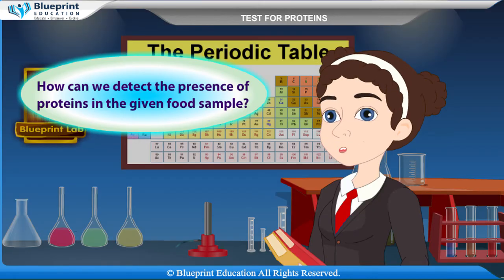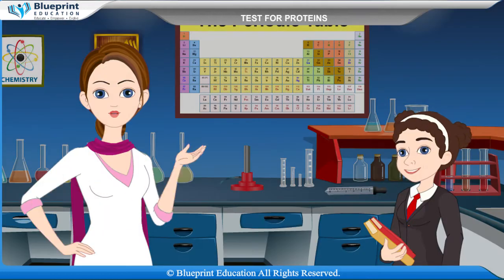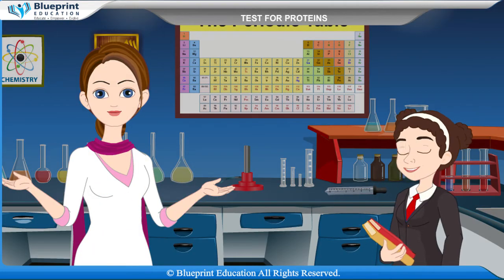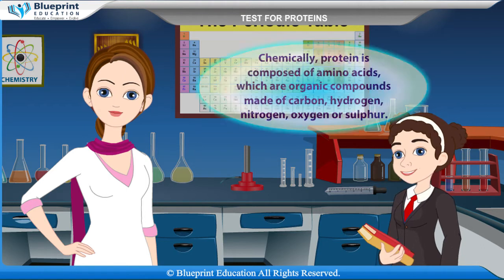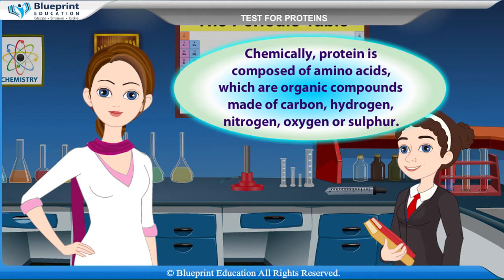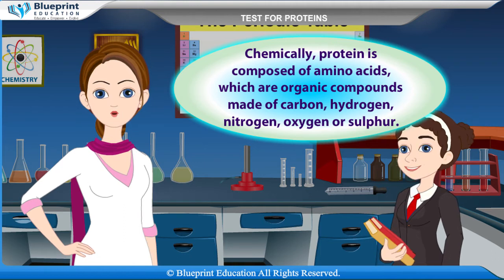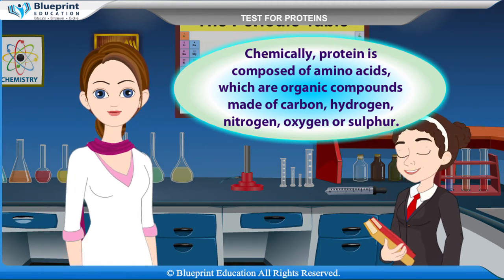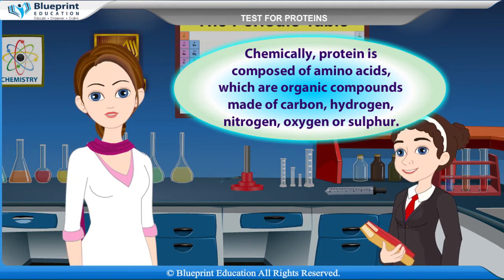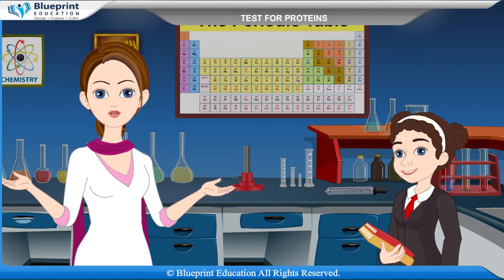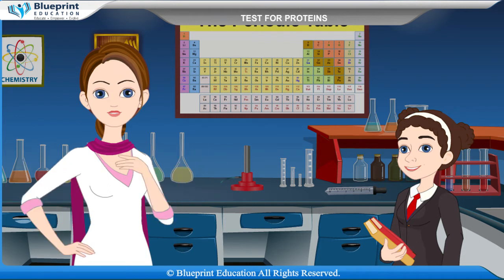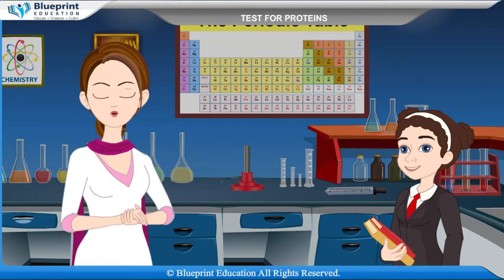How can we detect the presence of proteins in the given food sample? Protein is a macronutrient that is essential to building muscle mass. Chemically, protein is composed of amino acids, which are organic compounds made of carbon, hydrogen, nitrogen, oxygen, or sulfur. Let's do an experiment to detect the presence of proteins in the given food sample.